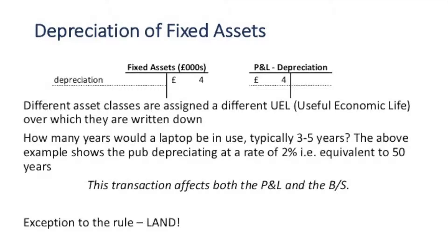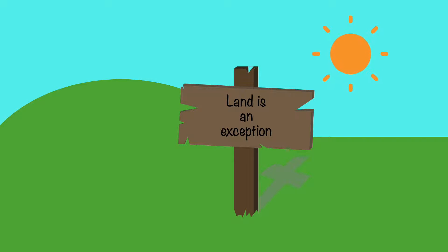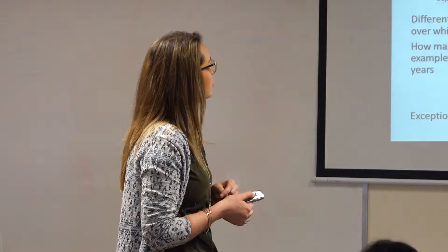Different asset classes are assigned different useful economic lives. Typically a laptop won't last more than five years, whereas a building is going to last for 50 years. The two percent depreciation rate is equivalent to it lasting 50 years, so you write it down over those 50 years. An exception to the rule is land, because land doesn't depreciate in value.